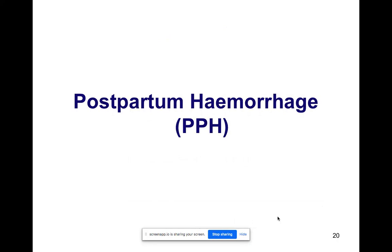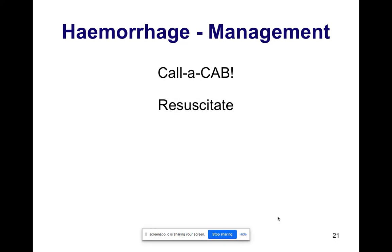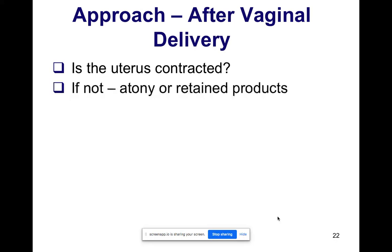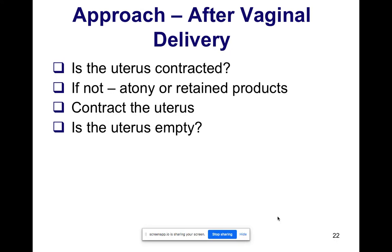Postpartum hemorrhage is classified as primary — occurring in the first 24 hours — and secondary — from 24 hours to six weeks. The definition is blood loss at normal vaginal delivery greater than 500 ml, and after caesarean section greater than one liter. After delivery: call for help, start CAB, resuscitate the mother, control the bleeding, make a diagnosis, and treat. After vaginal delivery, ask: is the uterus contracted? If not, is it an atonic uterus, or are there retained products?